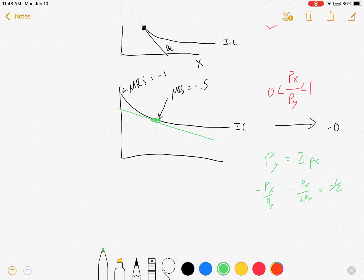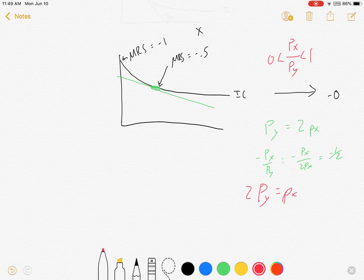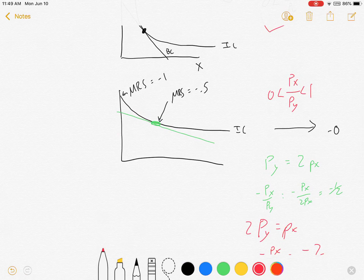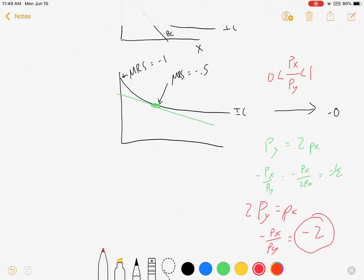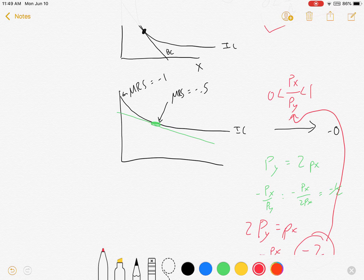But, if that price ratio changes, if instead we had 2py equals px, then negative px over py is equal to 2. And that, my friend, that minus 2 will never allow for an interior solution. We can only have interior solutions on this curve if they're between 0 and 1. 2 is outside of it.